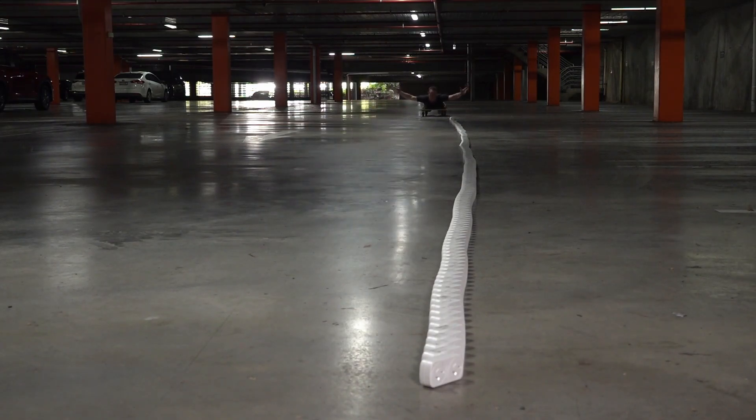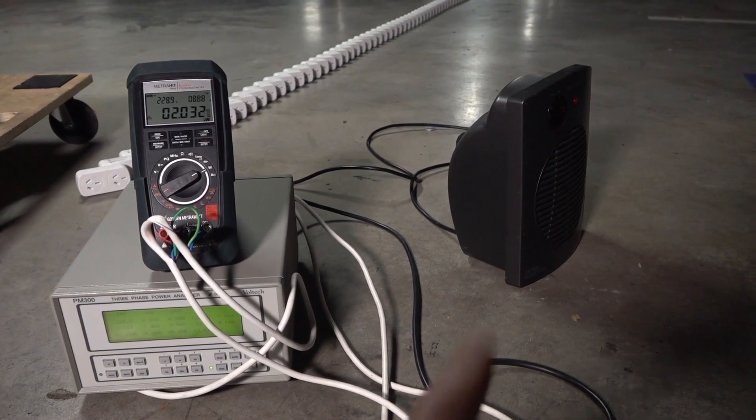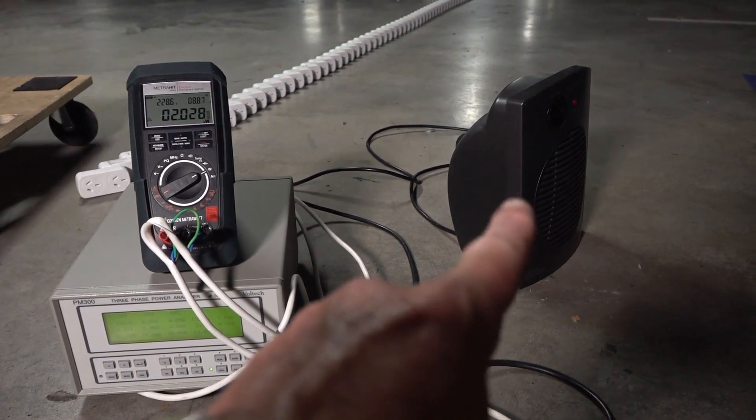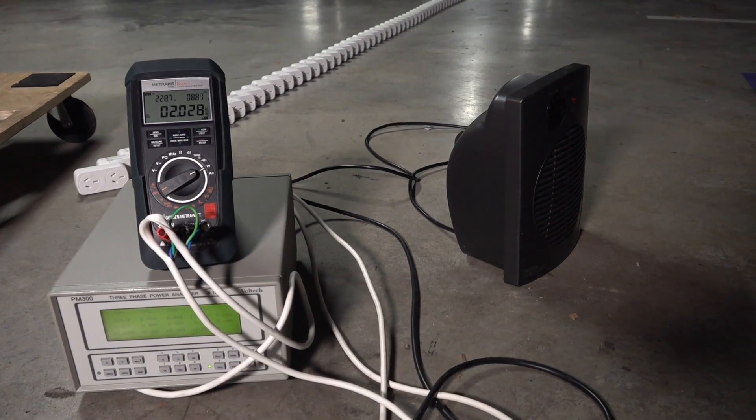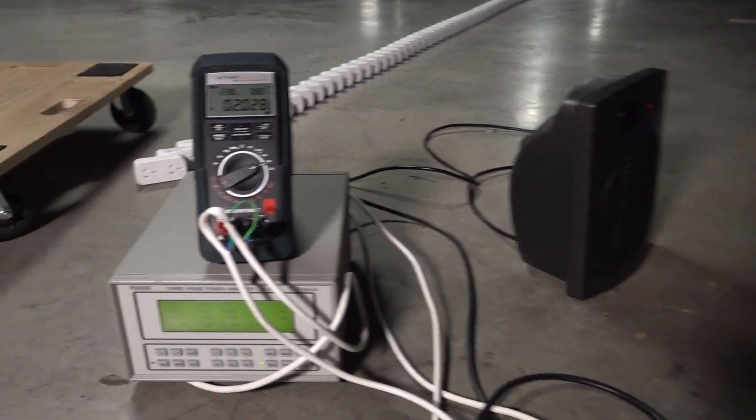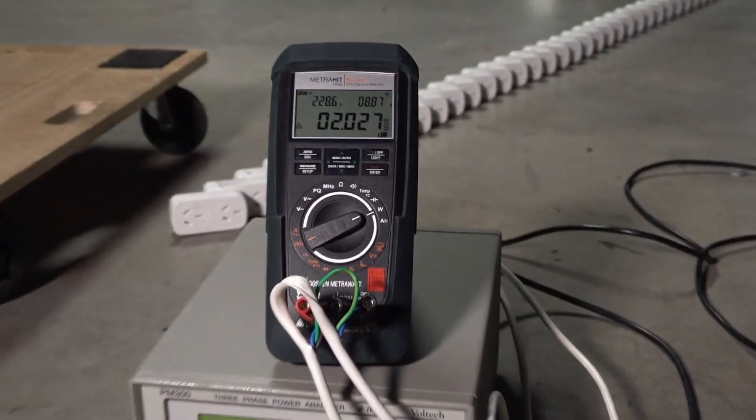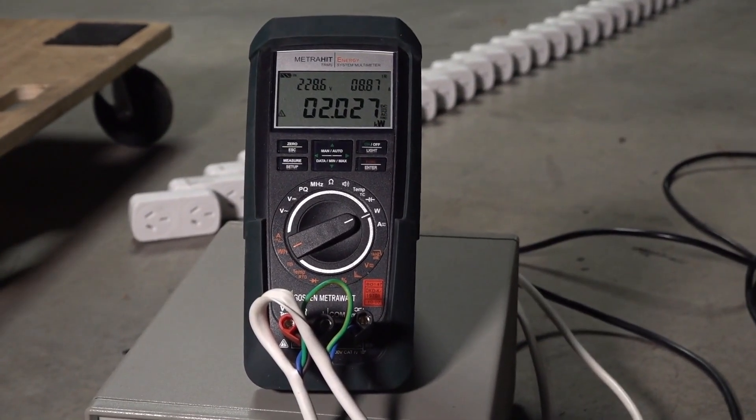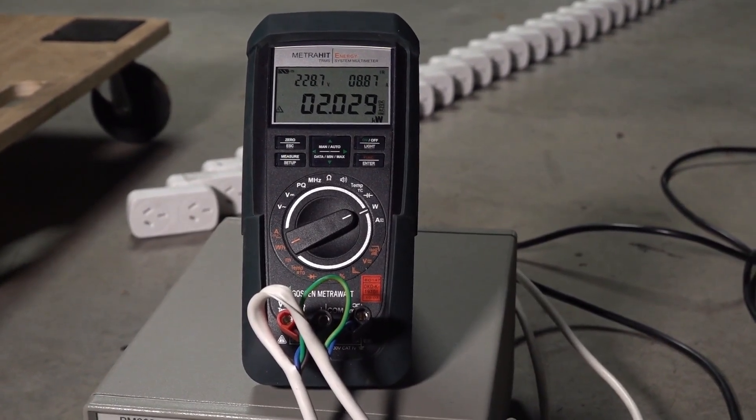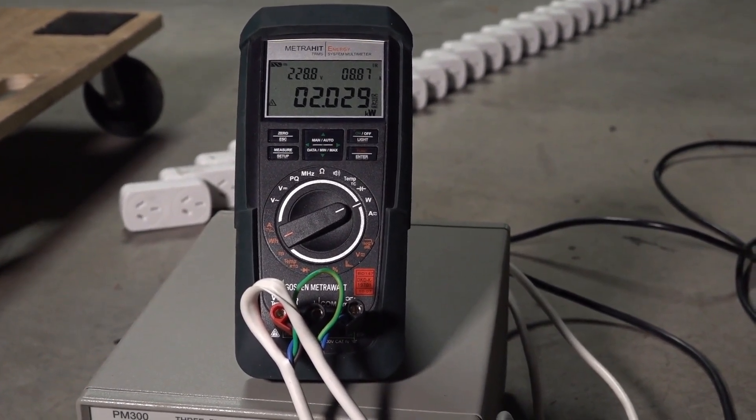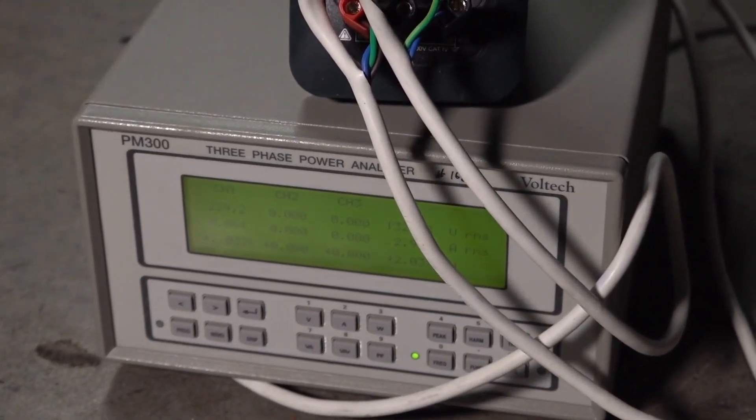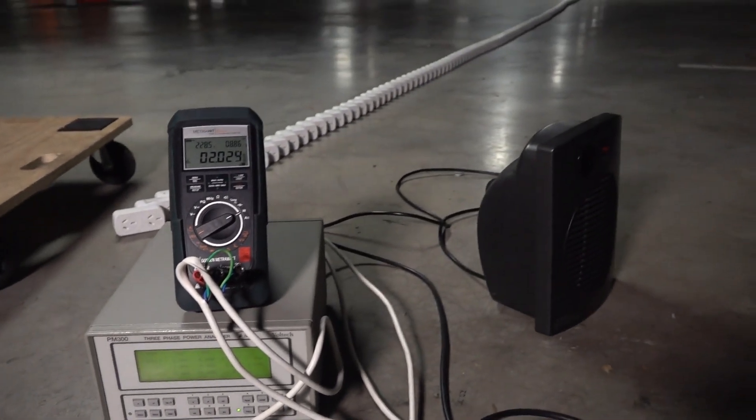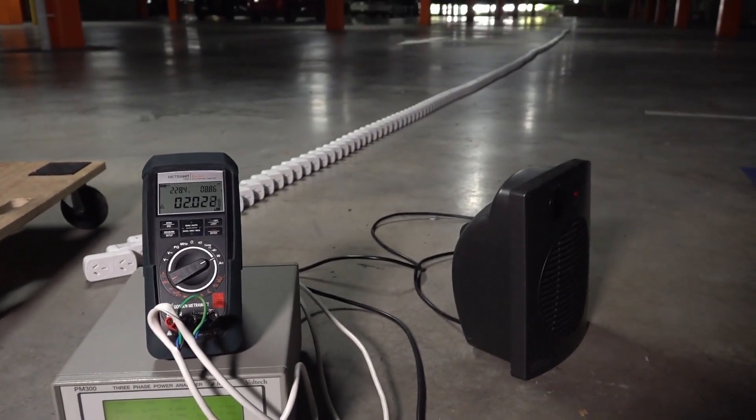All the way down here. Alright, here we're going to test this. I've got a load here, which is just one of those element heater things, selectable one kilowatt, two kilowatt. I've got it set to two kilowatts, and I've got both of my power meters in series here, so I'll put one at the start, one at the end.